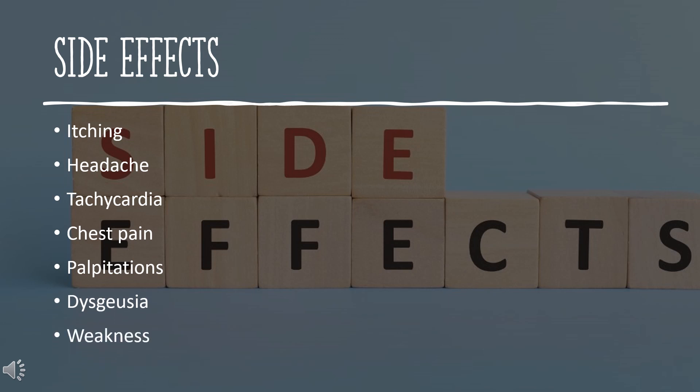Side Effects. Adverse effects of Captopril include cough due to increase in the plasma levels of bradykinin, angioedema, agranulocytosis, proteinuria, hyperkalemia, taste alteration, teratogenicity, postural hypotension, acute renal failure, and leukopenia.